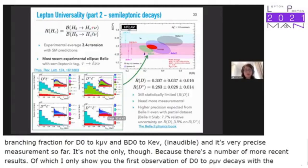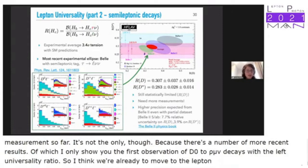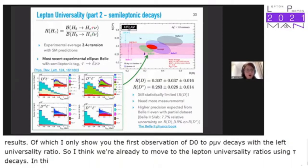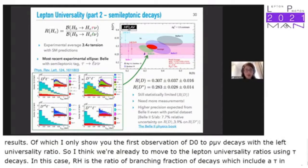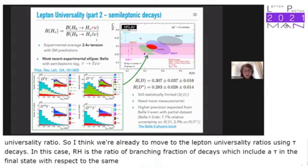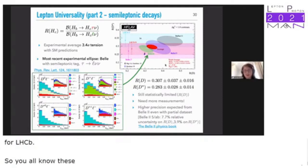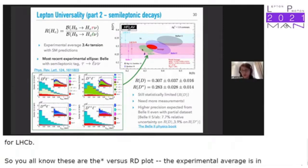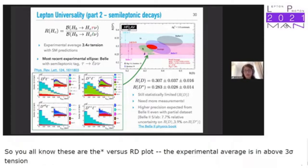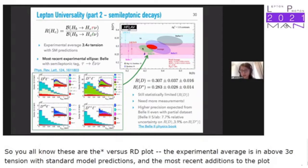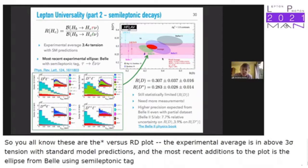Moving to lepton universality ratios using tau decays: RH is the ratio of branching fractions of decays including tau in the final state relative to the same decays with light leptons (muons so far at LHCb). The Rd* versus Rd plot shows the experimental average is in about three sigma tension with the standard model prediction. The most recent addition is the Belle ellipse using semileptonic and leptonic tau decays.